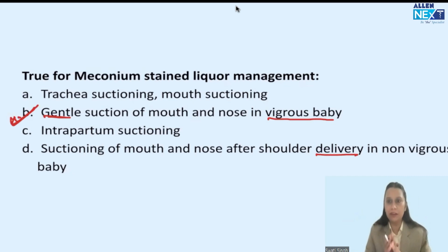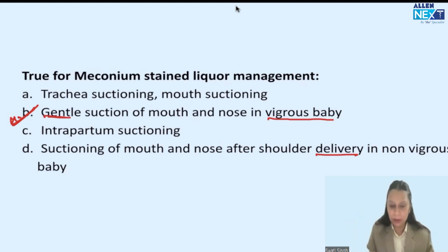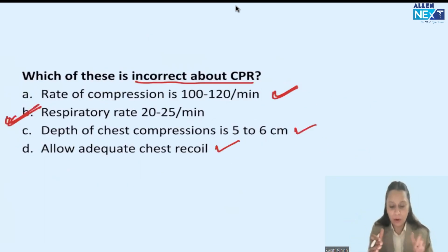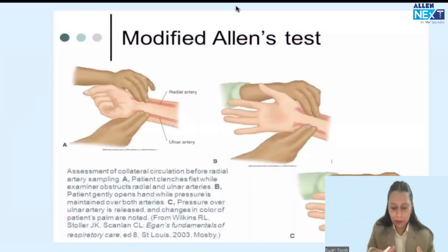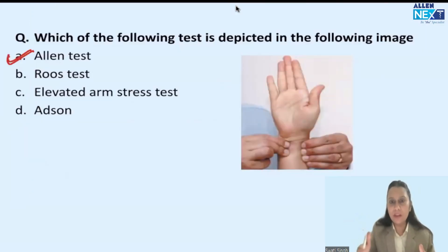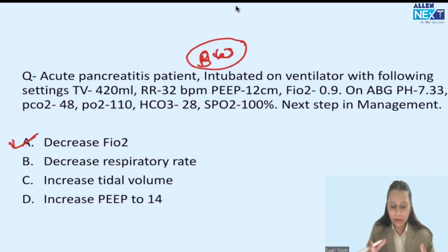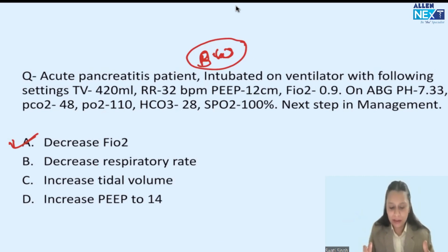So four questions were discussed. True for meconium-stained liquor management: gentle suction of mouth first, then nose, in a vigorous baby. For CPR: respiratory rate 20 to 25 per minute is the incorrect option — respiratory rate should be 10 breaths per minute. The image-based question: the image was of Allen's test being performed. And for the ventilatory setting question: the next step in management was decreased FiO2. I hope you got all four questions correct. Thank you for your patient listening and best of luck for your results.